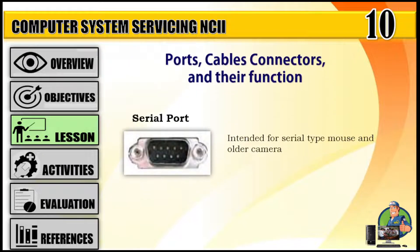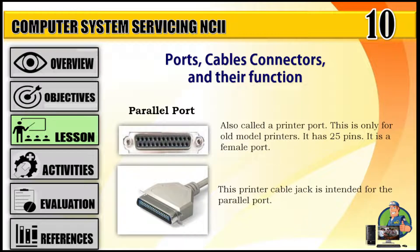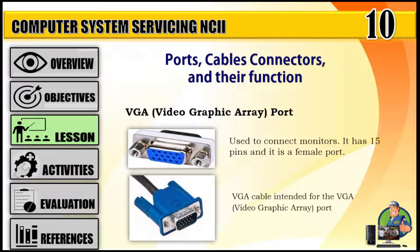Ports, cables, connectors and their function. Serial port: intended for serial type mouse and older hardware. Parallel port: also called a printer port, this is only for old model printers. It has 25 pins and is a female port. This printer cable jack is intended for the parallel port. VGA port, or Video Graphics Array, is used to connect monitors. It has 15 pins and is a female port.